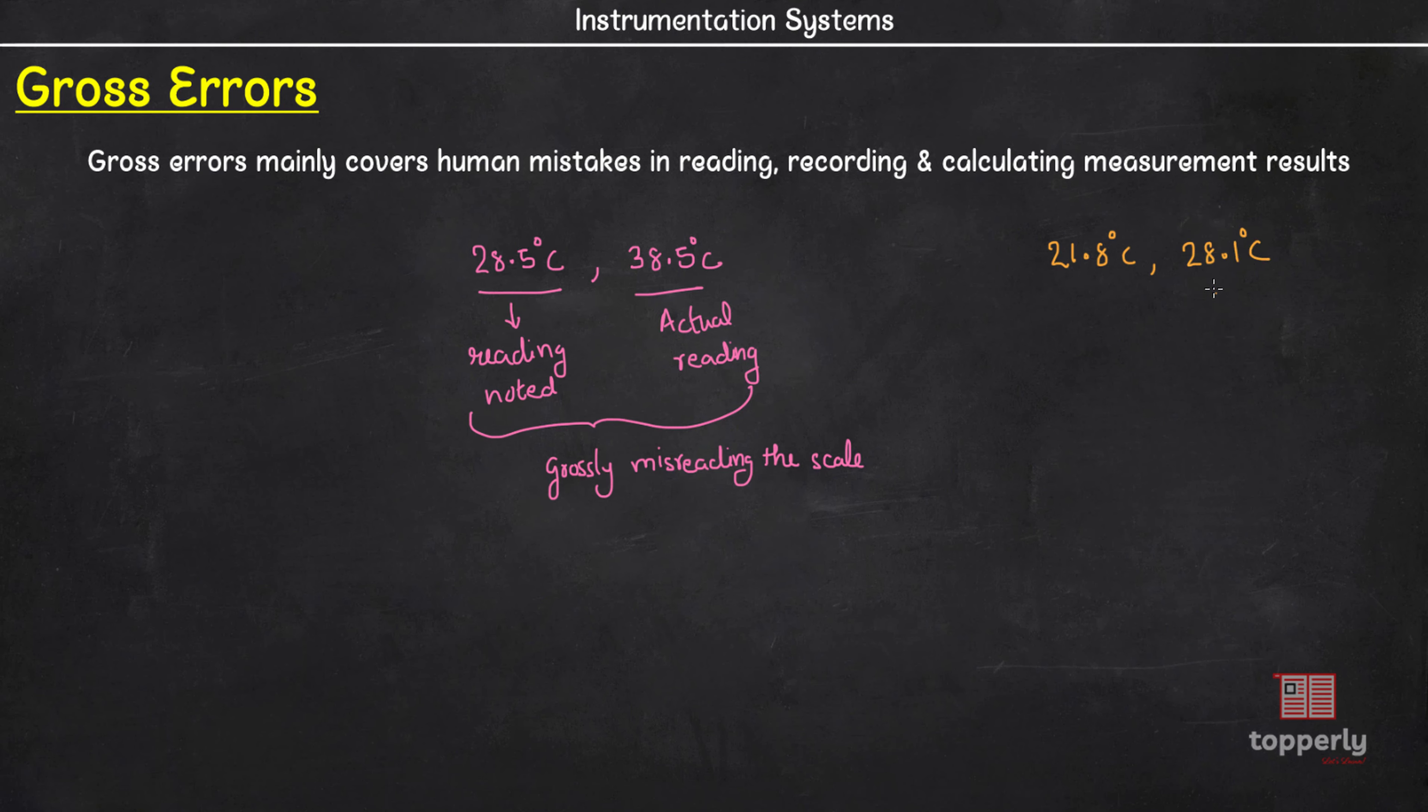Another example is a person may read 21.8 degree Celsius but while recording he may record it as 28.1 degree Celsius. So this is the recorded value and this is the actual reading.